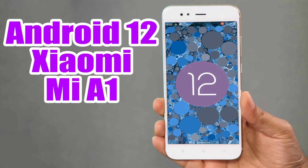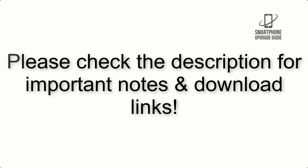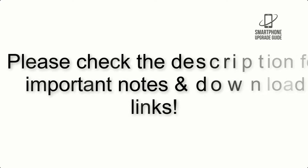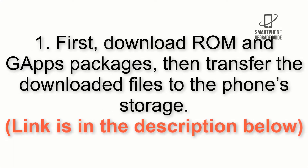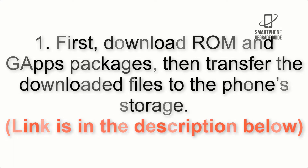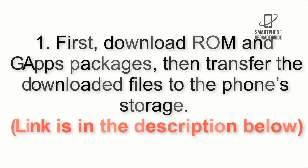Install Android 12 on Mi A1 via Lineage OS 19.1. Please check the description for important notes and all the download links. First, download the ROM and GApps packages, then transfer the downloaded files to the phone storage. The link is in the description below.